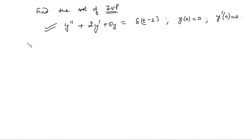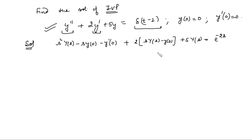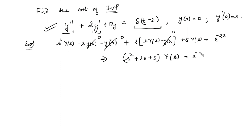The procedure: take the Laplace transform of both sides. The Laplace of y double prime is s squared Y(s) minus s times y(0) minus y'(0). Adding two times the Laplace of y prime, which is s times Y(s) minus y(0), plus five times the Laplace of y, which is Y(s), equals the Laplace of the Dirac delta function at 2, which is e to the power minus 2s. After substituting y(0) equals 0 and y'(0) equals 0 and simplifying, we get (s squared plus 2s plus 5) times Y(s) equals e to the power minus 2s.